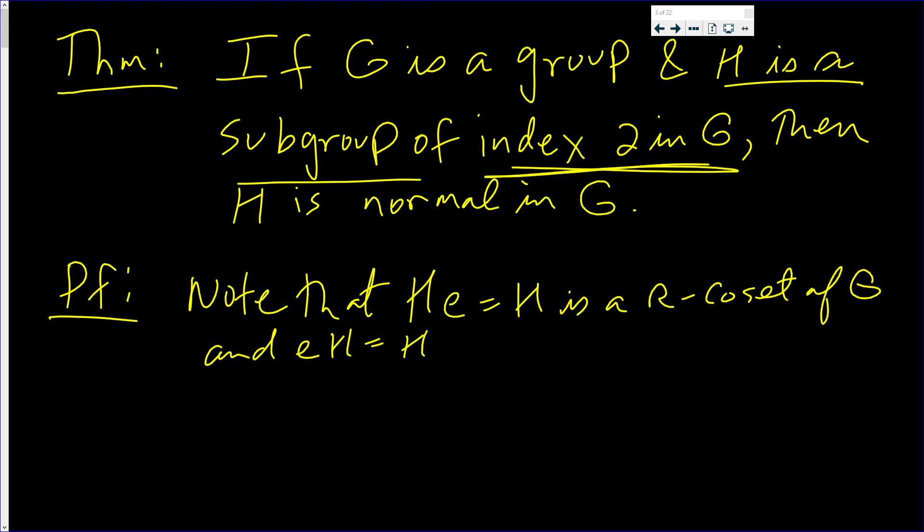And EH, which also is H, is a left coset of H in G. Maybe we should save that up here, so right coset of H in G.